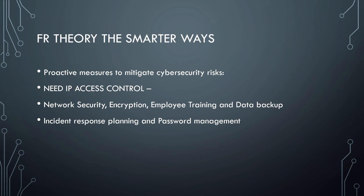Last question: explain briefly the proactive measures to mitigate cybersecurity risk. The shortcut is NEED IP ACCESS CONTROL. N for Network security, E for Encryption, E for Employee training, D for Data backup, I for Incident response planning, P for Password management, and lastly, Access control. So if the question asks for two measures to mitigate cybersecurity risk, pick from: network security, encryption, employee training, data backup, incident response planning, and password management.